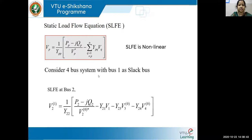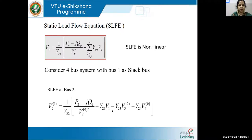Consider a four-bus system with bus one as the slack bus. If you want to find the second bus (PQ) voltage, you substitute the values by opening the sigma. Bus one is the slack bus, so we never assign an iteration count to V1 — its voltage is fixed and specified. The other buses — V3 and V4 — have an iteration count of zero initially.